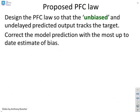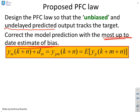So we're going to design the PFC law so that the unbiased, and here's the keyword, undelayed predicted output tracks the target. So what we do is we correct the model prediction with the most up-to-date, that's the key thing, the most up-to-date estimate of bias, which was what was on the previous slide. So we're going to say that the model n samples ahead plus the most updated bias, and I'm going to give this a shorthand ypm, is the same as the expected value of the process m plus n samples into the future. So there's the key thing. So if we take the model n samples ahead and correct it with this bias term, that gives us the expected process m plus n samples ahead.